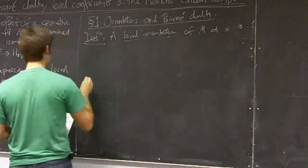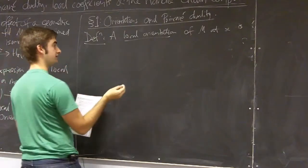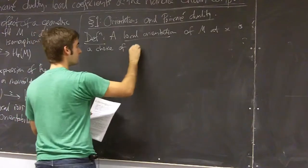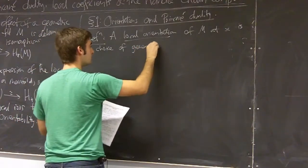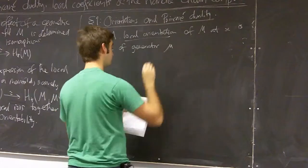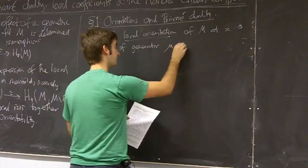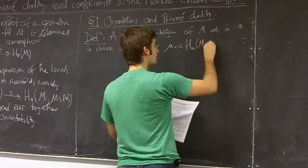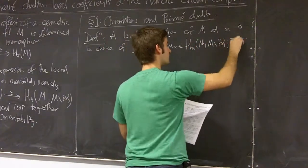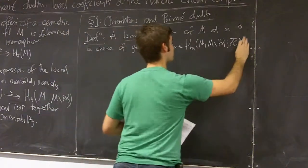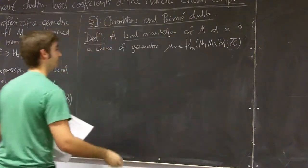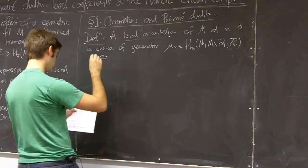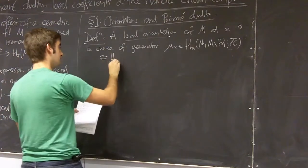is a choice of generator for this local relative homology group. And I'm going to be denoting generators as μ_x and this is homology with Z-coefficients. And we know that this is...